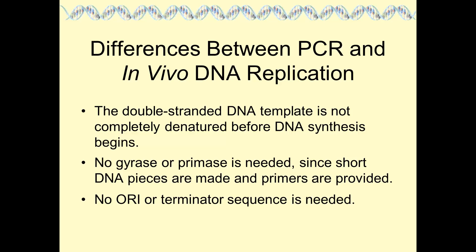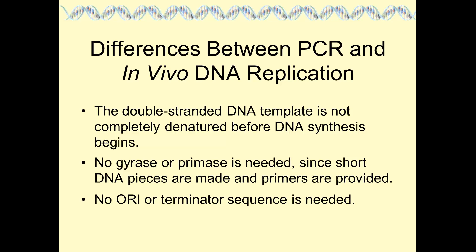There are important differences between PCR and in vivo DNA replication. In the cell, double-stranded DNA doesn't need to be completely denatured into single strands — there are single-stranded binding proteins, DNA gyrase, DNA helicase, and topoisomerases that unwind and manage the strands. In PCR, you don't need a primase to make an RNA primer because you provide the DNA primers yourself, and you don't need special sequences to signal where to start or stop replication — the primers determine that.